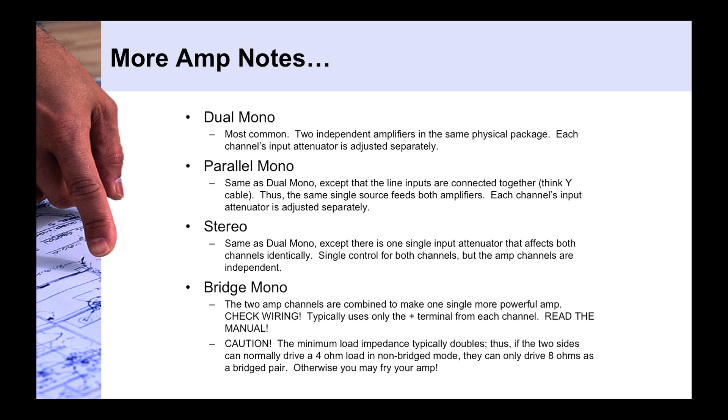Now, parallel mono is the same as dual mono in that, in the sense that you do have two discrete amplifiers in the same box, but it's simply giving you a virtual Y cable so that you can plug in, let's say you have input 1 and input 2, and you want the same thing amplified. Parallel mono will simply allow you to connect one cable into input 1, and it will automatically and internally connect it to input 2. So, you just have one cable to feed the input of both amplifier channels within the box.